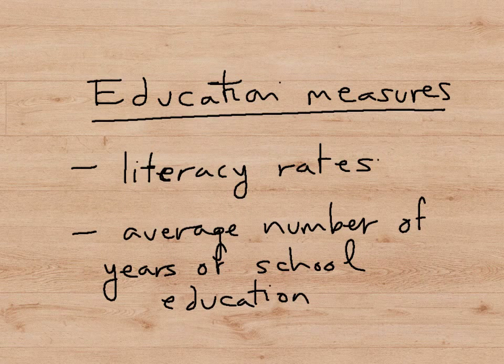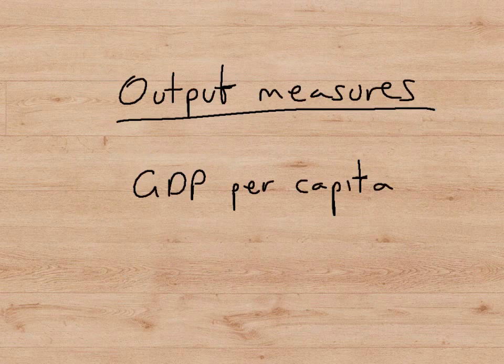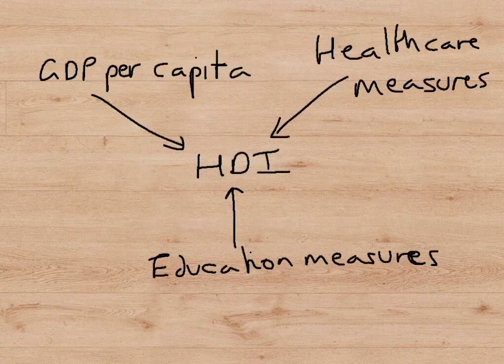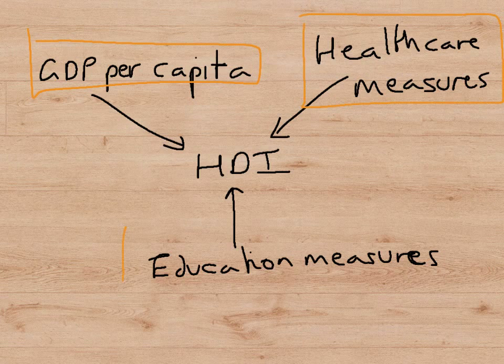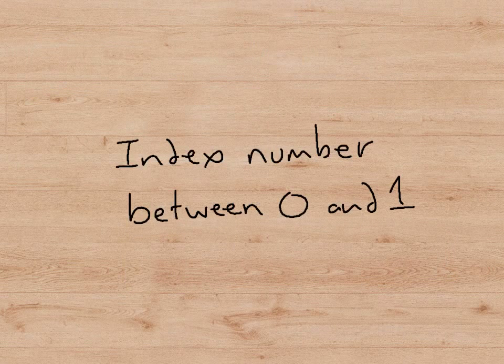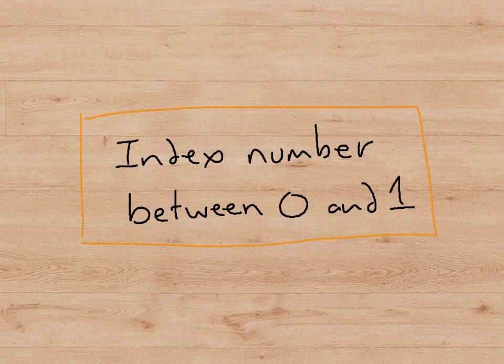In terms of education, the HDI includes literacy rates — that is the percentage of the population who are able to read and write — as well as the average number of years of school education that is common in the economy. The output measure used is GDP per capita. So taking these three measures — output, health care, and education — the HDI comes up with an index number somewhere between 0 and 1 for every economy.